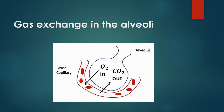Because the air in the alveolus has a higher concentration of oxygen than the blood entering the capillary network, oxygen diffuses from the air across the wall of the alveolus and into the blood. At the same time, there is more carbon dioxide in the blood than in the air in the lungs, creating a diffusion gradient in the other direction, so carbon dioxide diffuses out of the blood and into the alveolus. The blood leaving the capillaries returns to the heart carrying oxygen and having lost carbon dioxide, and the heart pumps the oxygenated blood around the body to supply the respiring cells.